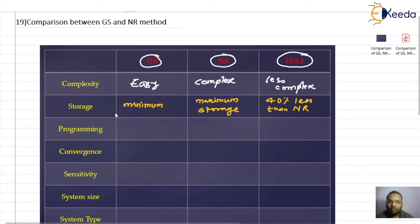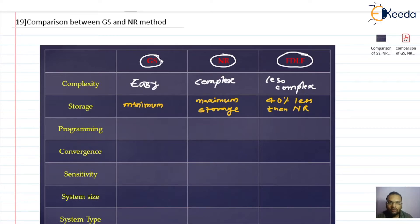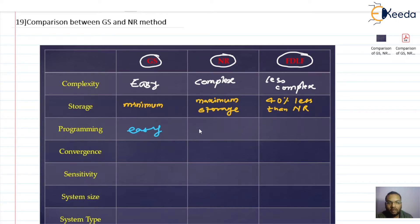For the fast decoupled method, we need about 40 percent less storage compared to the Newton-Raphson method. These methods are typically solved using programming tools such as MATLAB or PSCAD. Programming-wise, the Gauss-Seidel method has easy programming. Newton-Raphson has tough programming, while the fast decoupled load flow method is comparatively less tough than Newton-Raphson.